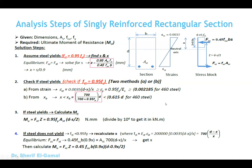These are three easy steps to analyze any singly reinforced rectangular section: calculate S by making equilibrium, check the steel, and calculate the capacity. If the steel is not yielding, recalculate S again replacing the stress in the steel with 700(d − X)/X, then calculate X again, and then calculate the capacity of the cross-section.